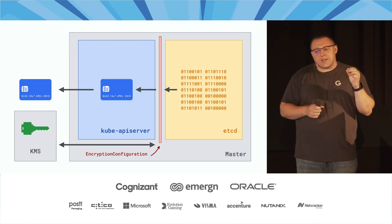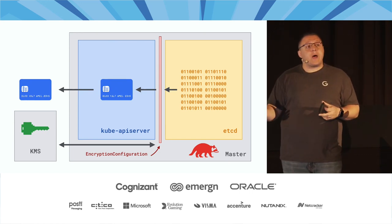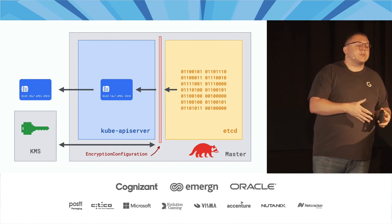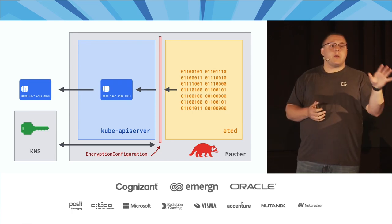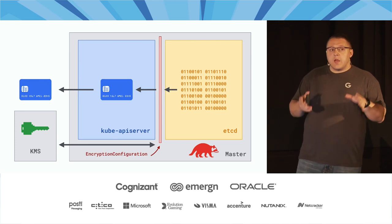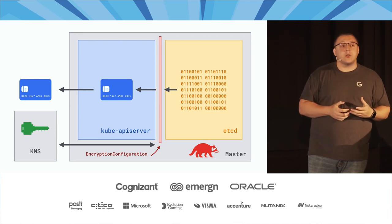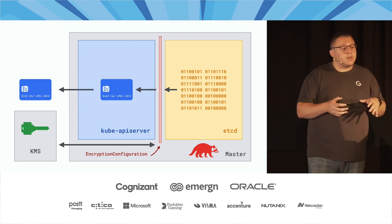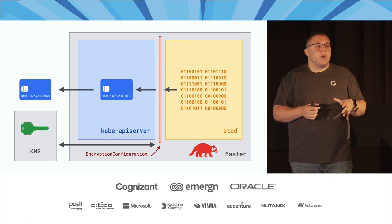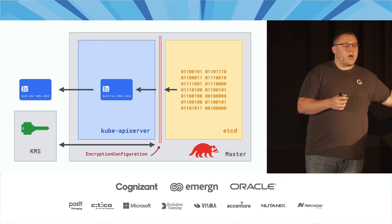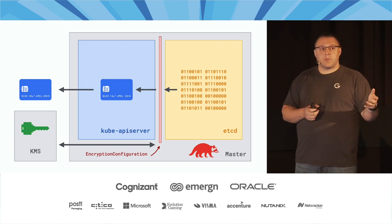Now if an attacker has access to the master node — whether physical access or access to a backup — they don't have access to the underlying keys. They have access to the encrypted data and can make API calls to the KMS provider. But if you've secured your Unix socket permissions and leverage cloud provider IAM authentication, they may not have that permission. We've greatly improved our security posture over zero encryption, and marginally improved it over keys on disk by leveraging this third-party provider.